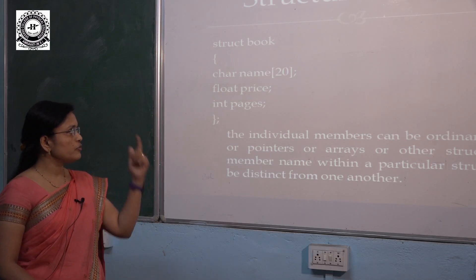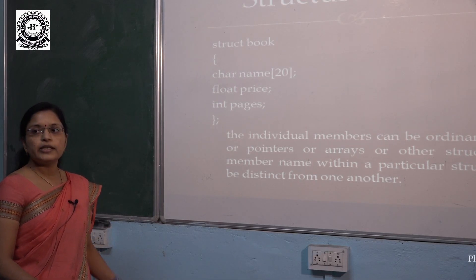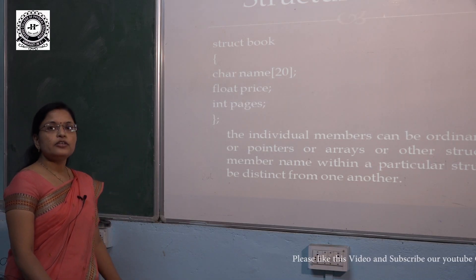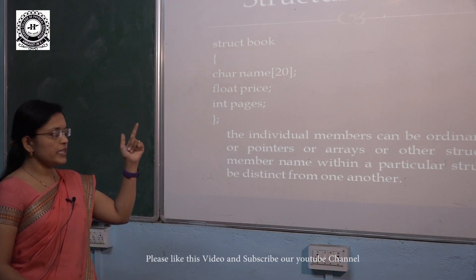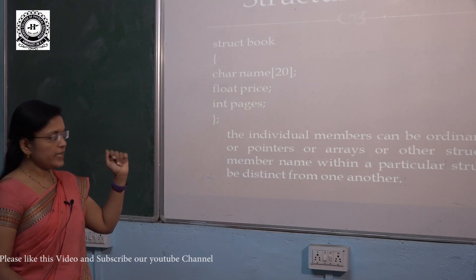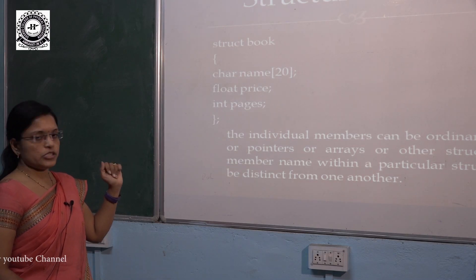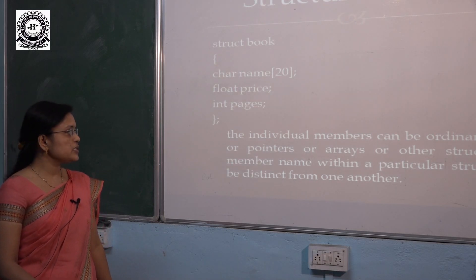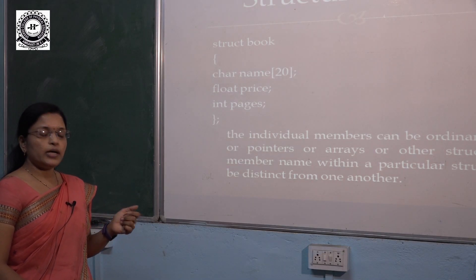To define the structure for book, we need the struct keyword, then for the tag name we use 'book', and then we define 3 members inside the curly braces: the first is name with a character array of size 20, the second is price with float data type, and the third member is pages with int. The individual members can be ordinary variables, pointers, arrays, or even other structures.